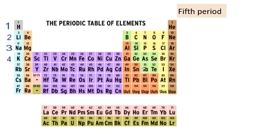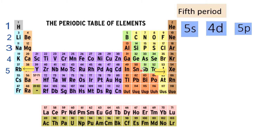The fifth period starts with rubidium, which has configuration 5s1. In between 5s and 5p, the 4d orbitals are filled. So the total number of elements in the fifth period is s2 + d10 + p6 = 18 elements. The fifth period runs from rubidium to xenon.